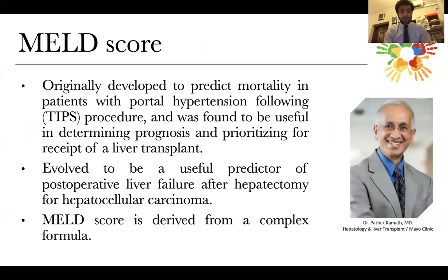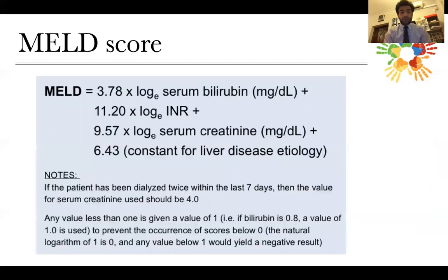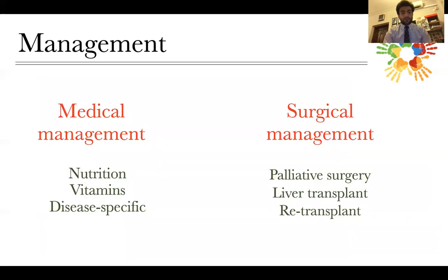The MELD score was originally developed to predict mortality in patients with TIPS — transjugular intrahepatic portosystemic shunt — and to prioritize patients as recipients for transplant. It evolved to be a useful predictor of post-operative liver failure after hepatectomy for hepatocellular carcinoma. MELD uses a more complicated formula based on serum bilirubin, INR, and serum creatinine, and can be calculated online. MELD stands for Model for End-Stage Liver Disease.